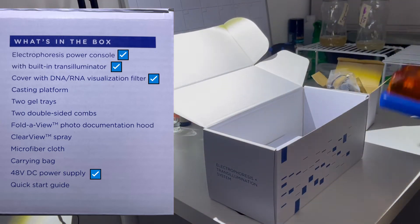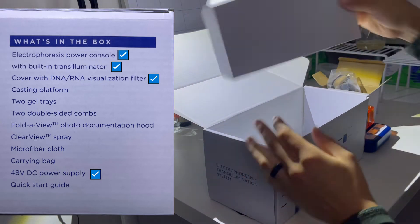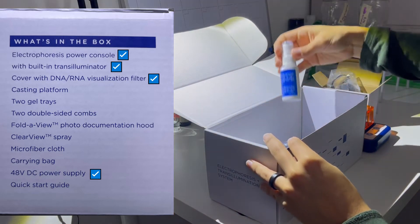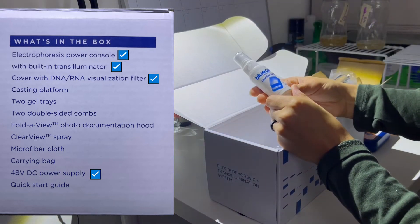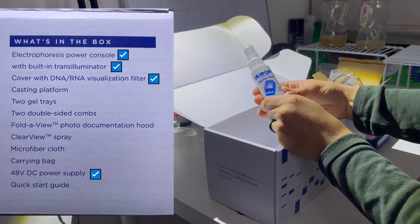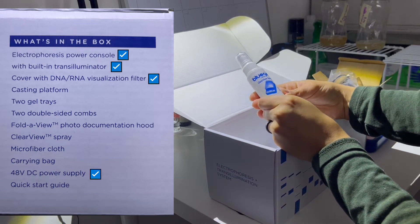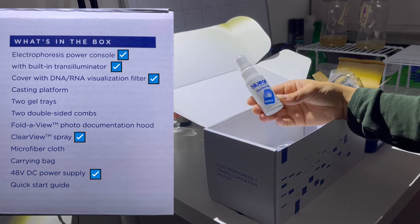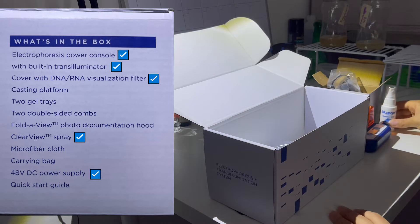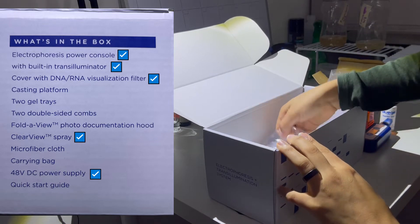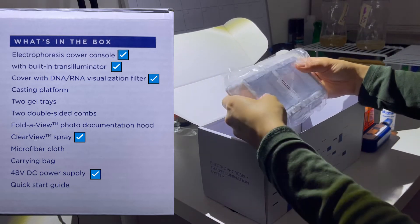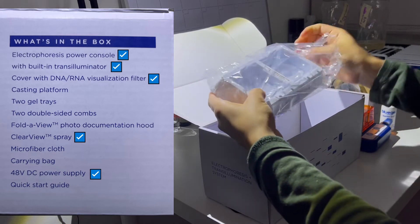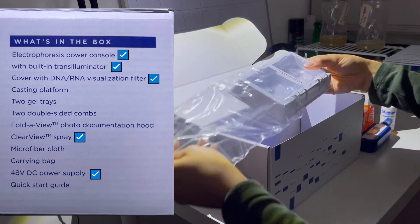I like it. What's next? More packaging, and a spray bottle. I'm guessing this is the ClearView spray that you put on the orange covering. And here is the casting tray or casting platform.